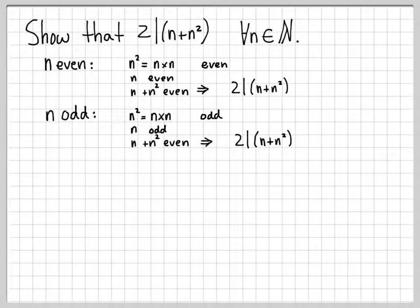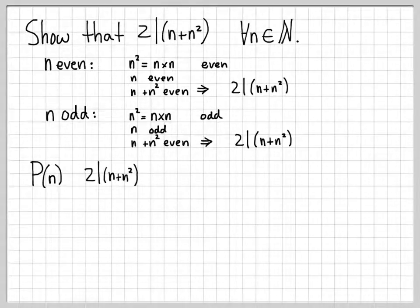So this is an easy direct proof to do. Since we're doing mathematical induction right now, let's do this via mathematical induction. So what we're trying to establish is the statement P of n, where the statement P is a function of the natural number n, and we're trying to establish that two does divide n plus n squared for all natural numbers n.